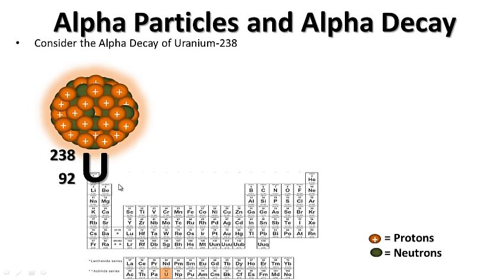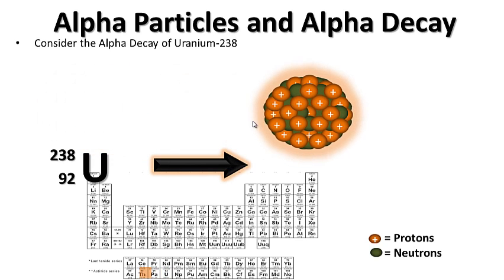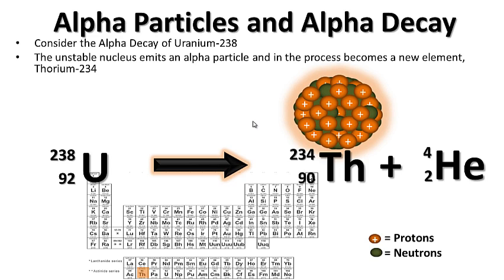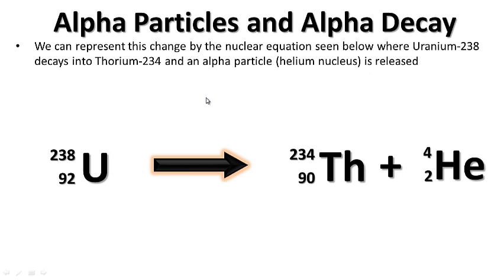Consider the alpha decay of uranium-238. The unstable nucleus emits an alpha particle and in the process becomes a new element, thorium-234. Notice the mass number decreased by four — 238 to 234 — and it lost two protons, so the atomic number went from 92 to 90, which is the atomic number for thorium. We can represent this change by the nuclear equation where uranium-238 decays into thorium-234 and an alpha particle is released.